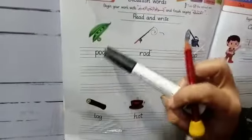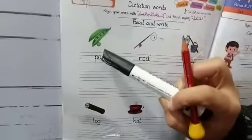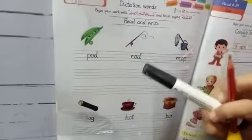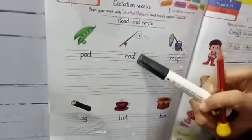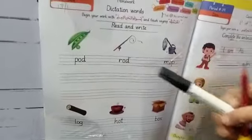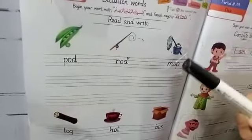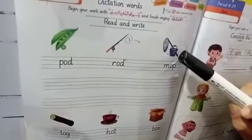This is pod. You can see the picture of pod. This is rod. You can see the picture of rod. R-O-D, rod. This is mop. You can see the picture of mop.